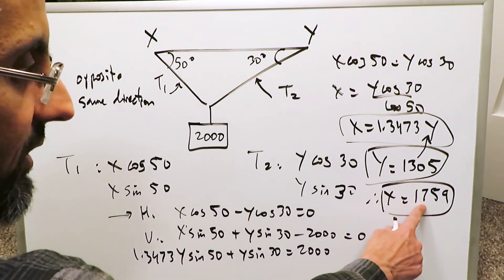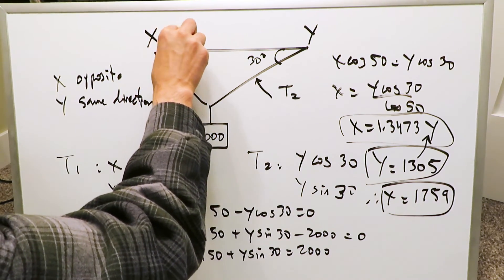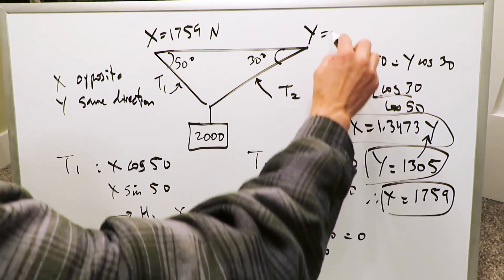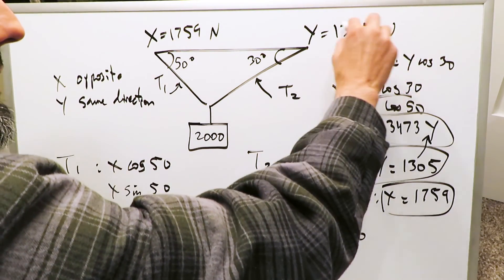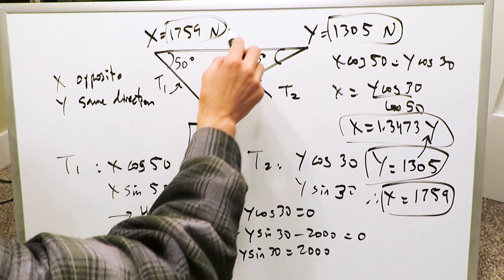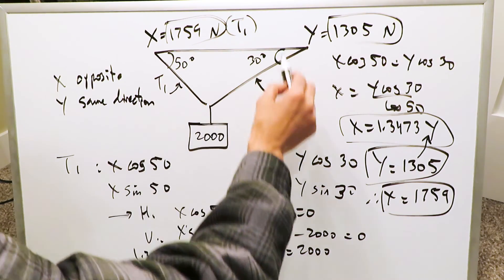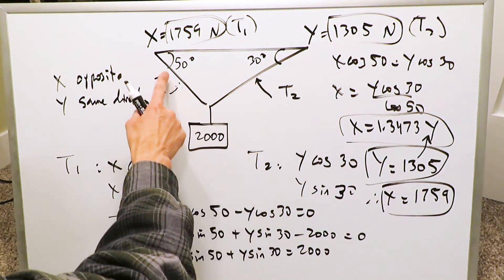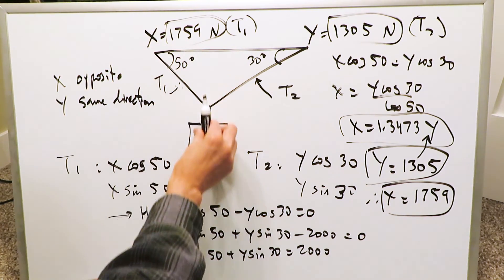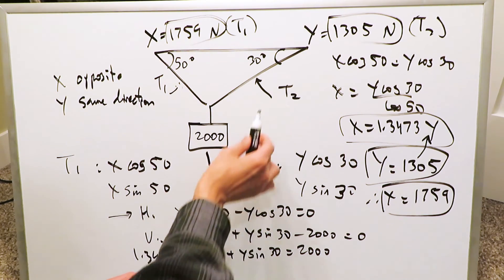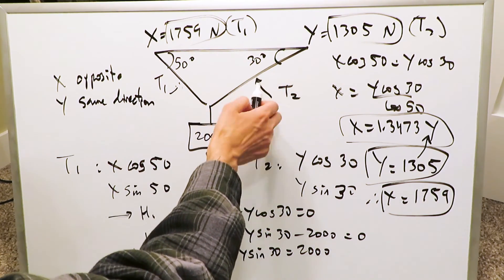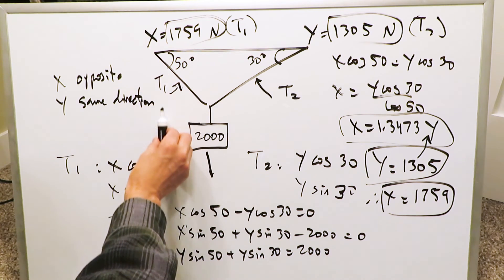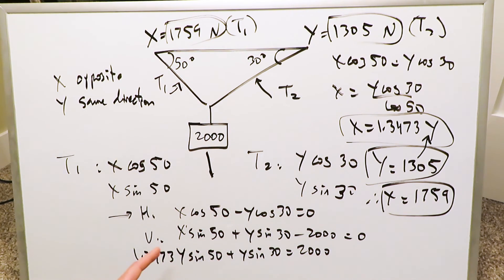So x equals 1759 and y equals 1305 — the units could be newtons or whatever tension units apply. The tension T1 equals 1759 and tension T2 equals 1305. T1 is larger because its 50-degree angle is more in line with gravity pulling the weight downward. T2 is smaller because the 30-degree angle is less aligned with gravity — the closer the angle is to 90 degrees, the larger the tension.